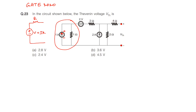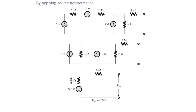V is equal to IR and the same R should be taken. So this is R and it is I, and 1 into 1 is 1 volt. The value is 1 volt and R is equal to 1 ohm. By applying source transformation you have modified this branch with 1 volt and 1 ohm.